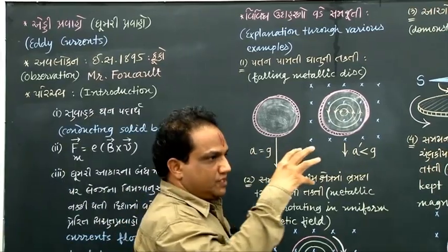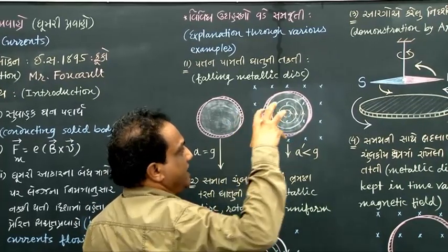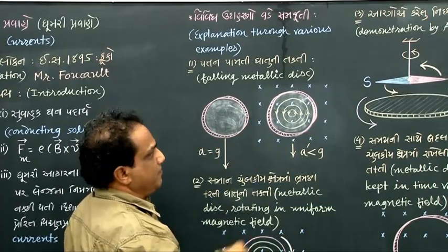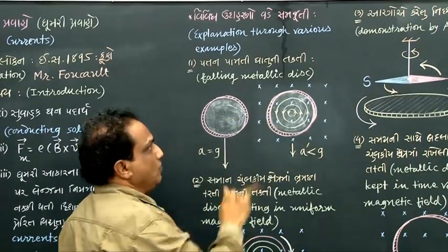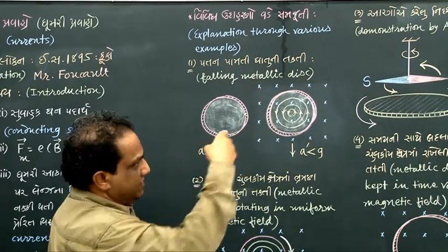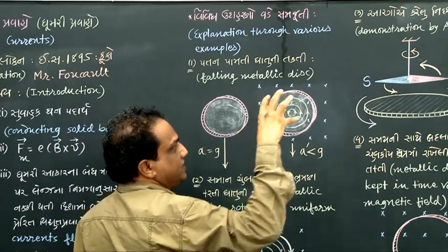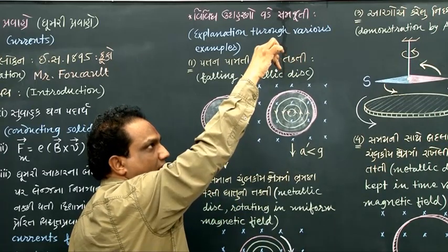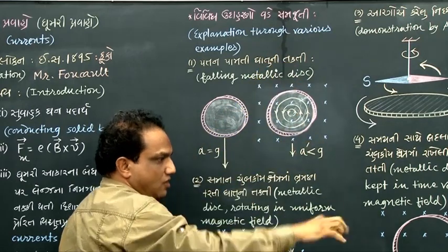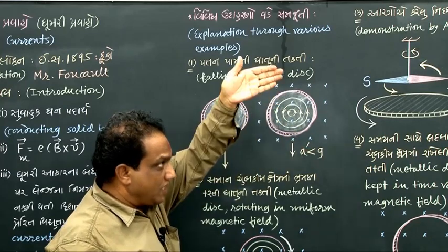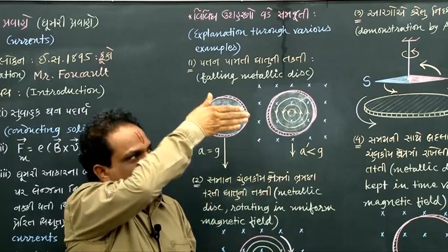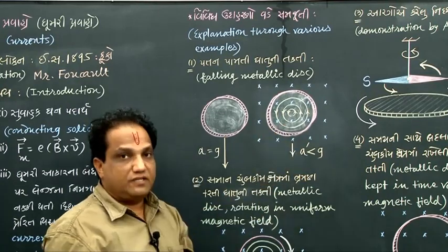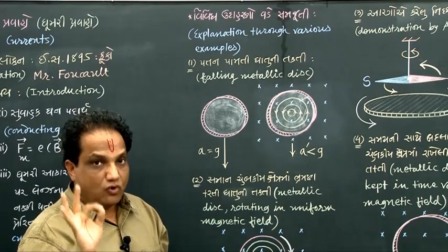Now suppose we have a uniform magnetic field which is perpendicular and going inside the plane of the figure — shown by the symbol of a cross. In that magnetic field, we just drop the metallic disc. As it moves downwards, it will cut the magnetic field lines. Because magnetic flux is cut by the falling disc, some induced currents are produced inside the disc.